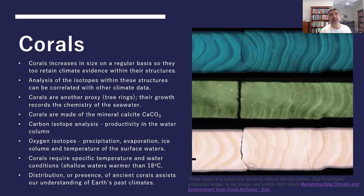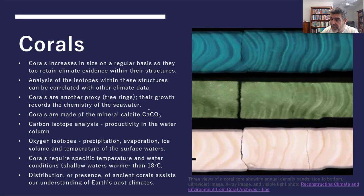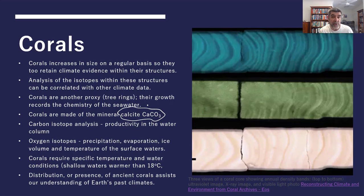Corals are grouped here alongside speleothems because corals are the living forms of what will in the future produce limestone and potentially become speleothems. They too are based around calcite — calcium carbonate — containing three important elements: calcium, carbon, and oxygen, both of which have isotopes used in geological studies.